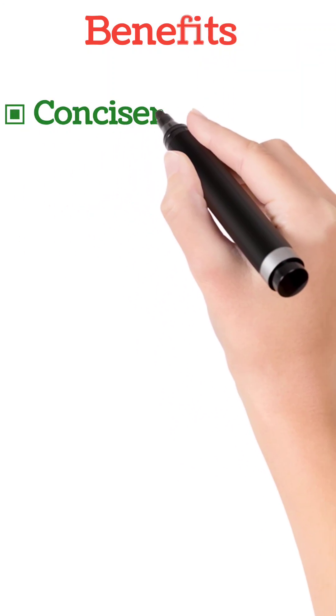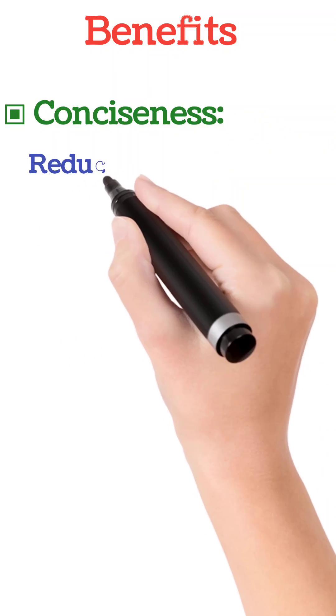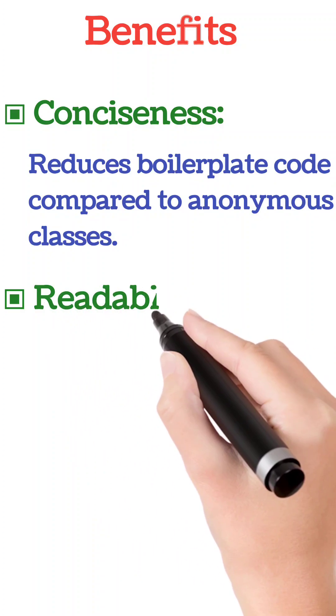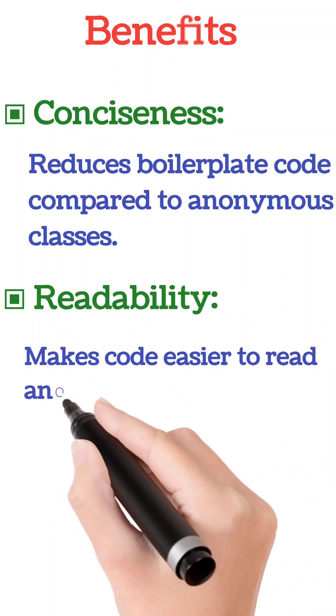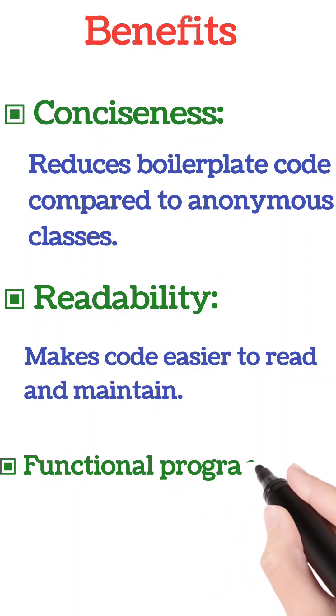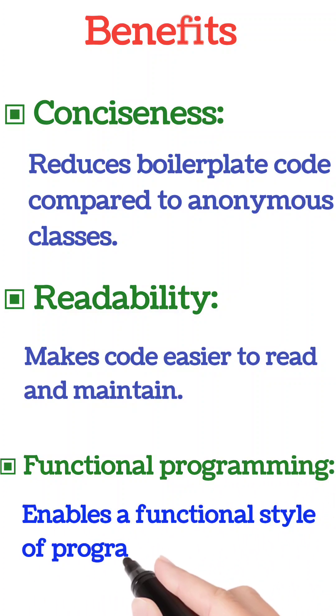First is conciseness: it reduces boilerplate code compared to anonymous classes. Second is readability: it makes code easier to read and maintain. Third is functional programming: it enables a functional style of programming in Java. Thank you.